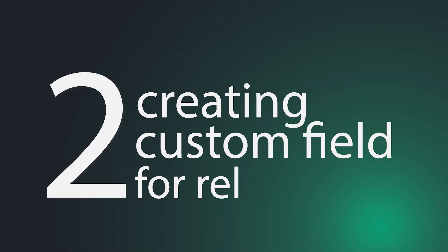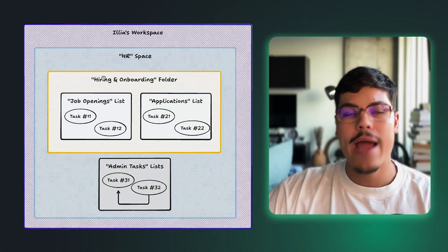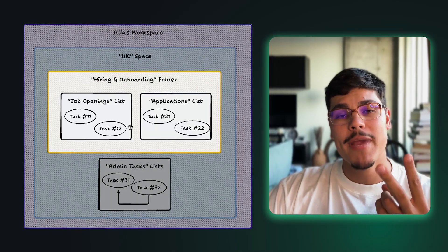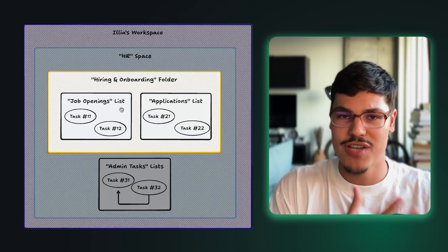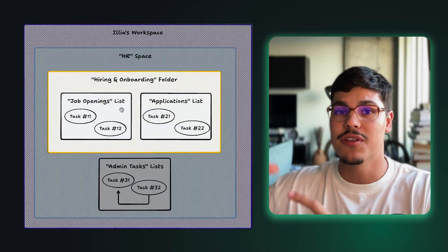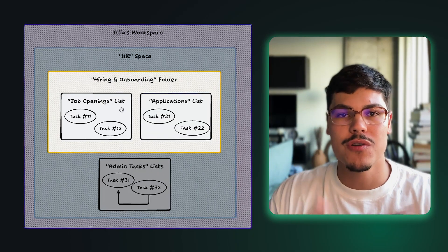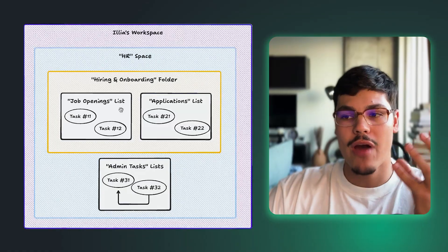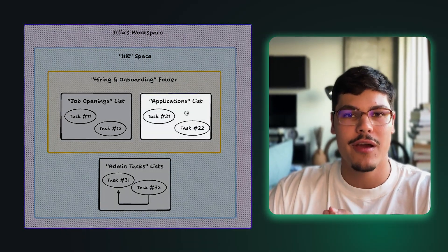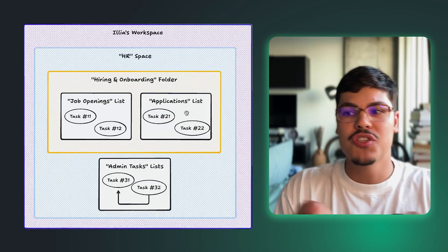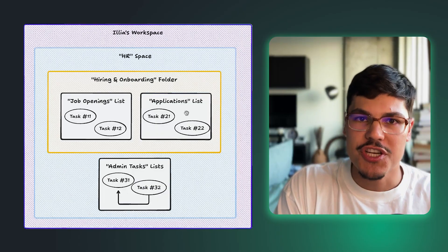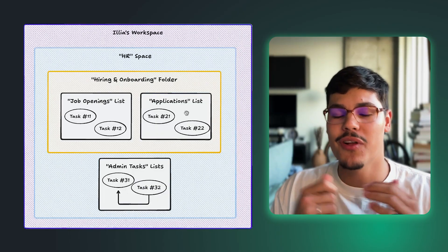Let's jump into the second way to link two tasks together inside ClickUp — creating a ClickUp relationship custom field. For this example we'll use our hiring and onboarding folder where we're tracking two main deliverables. Tasks in ClickUp can represent not just action items but also deliverables or any item you want to track. There's a logical question of how we relate our applications to our job openings so we know who applied to which position — this is where the relationship custom field comes in.